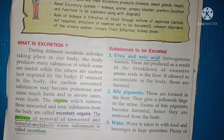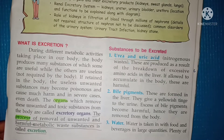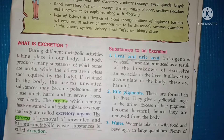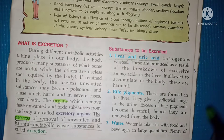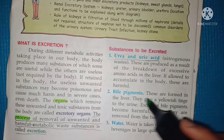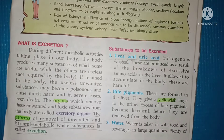The next substance that must be excreted is bile pigment, which is also very harmful and must be removed. This is formed in the liver. It is the yellowish substance in urine — the reason urine is yellow is due to bile pigment. Excess of bile pigment becomes harmful and so it is removed from our body.